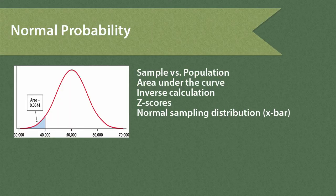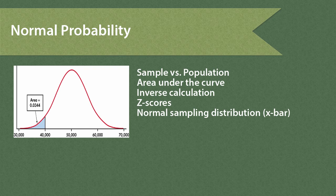Normal probability. In this program we're going to introduce use of the normal probability distribution. The most important part about this unit is being able to distinguish for the first time between a sample of real data and a population model. We're going to use the normal curve as a model of what we think a population distribution is like, and using that curve we can calculate probability as area under the curve. We can also calculate backwards using an inverse calculation. Fundamental to all this is use of z-scores, and finally we're going to apply normal probability theory to the normal sampling distribution of x-bar.